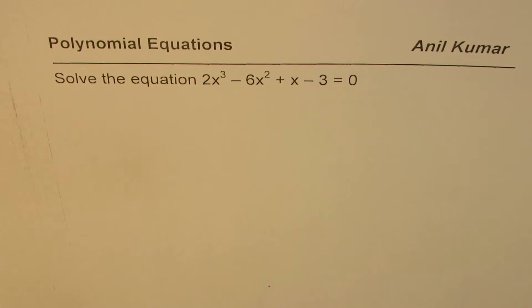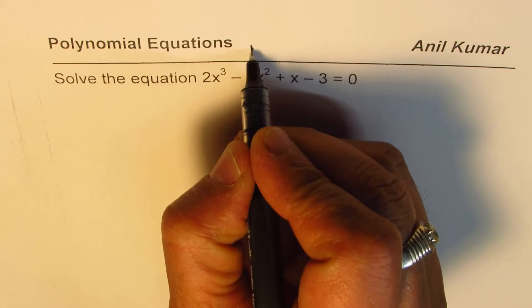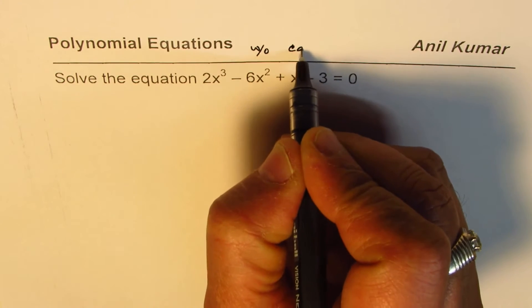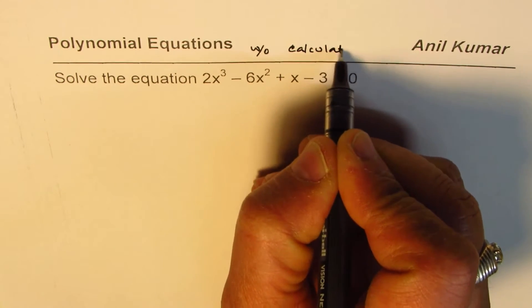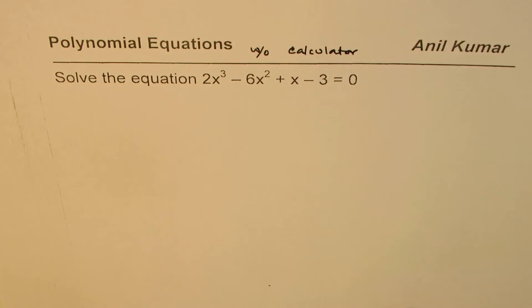I'm Anil Kumar sharing with you a question on new SAT format. Solve the equation 2x³ - 6x² + x - 3 = 0. You need to solve this without calculator. You can pause the video, answer the question, and look into my suggestion.